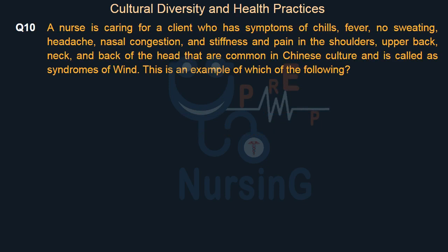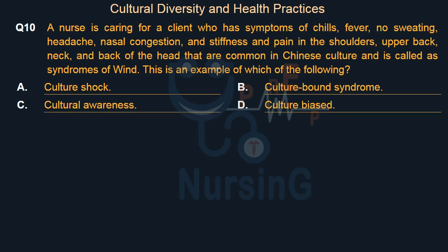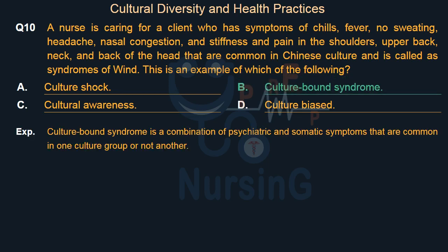A nurse is caring for a client who has symptoms of chills, fever, no sweating, headache, nasal congestion, and stiffness and pain in the shoulders, upper back, neck, and back of the head — common in Chinese culture and called syndromes of wind. This is an example of which of the following? Option A: Culture shock. Option B: Culture-bound syndrome. Option C: Cultural awareness. Option D: Culture biased. The right answer is Option B — Culture-bound syndrome. Culture-bound syndrome is a combination of psychiatric and somatic symptoms common in one cultural group but not another.